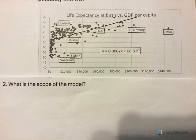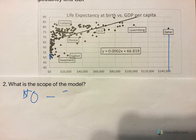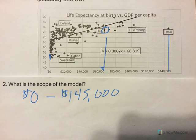What's the scope of the model? Well, we're looking at X values, so we're starting at values that look pretty close to $0 — I'm sure nothing is $0, but it's pretty close. And then we have Qatar over here, which looks to be about $145,000. That is a really high GDP per capita. Here's the U.S., and we do pretty well — we're mid-60s, pretty close to 70, and that's pretty good. $145,000 is pretty high, and that's an estimate.